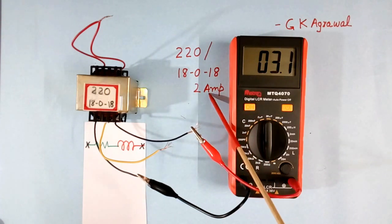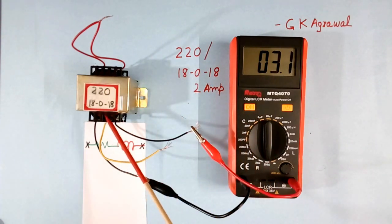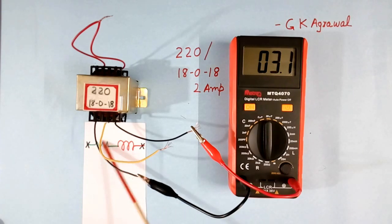The more the ampere rating is, and the better the quality of the transformer, the lower the value of resistance will be.